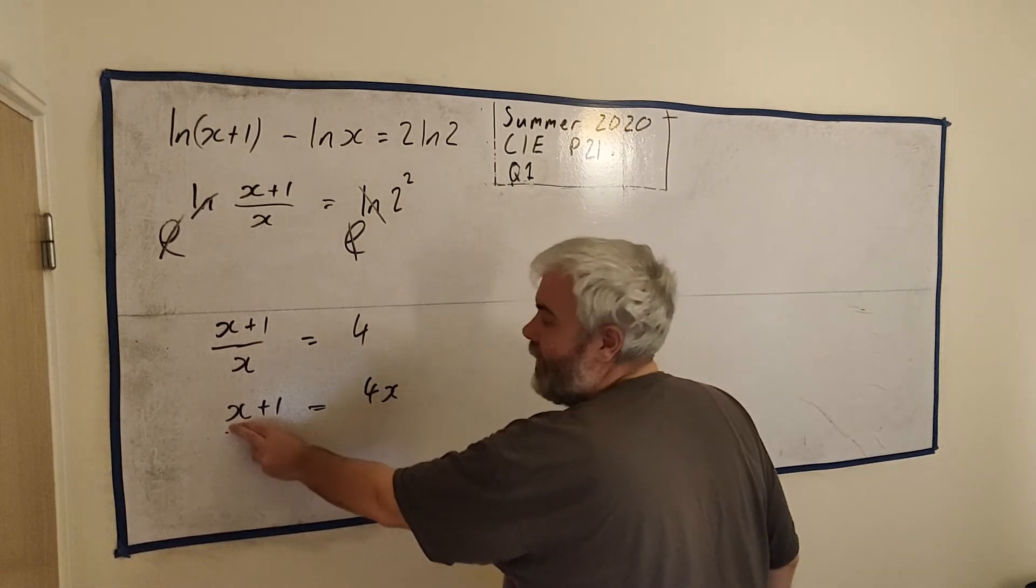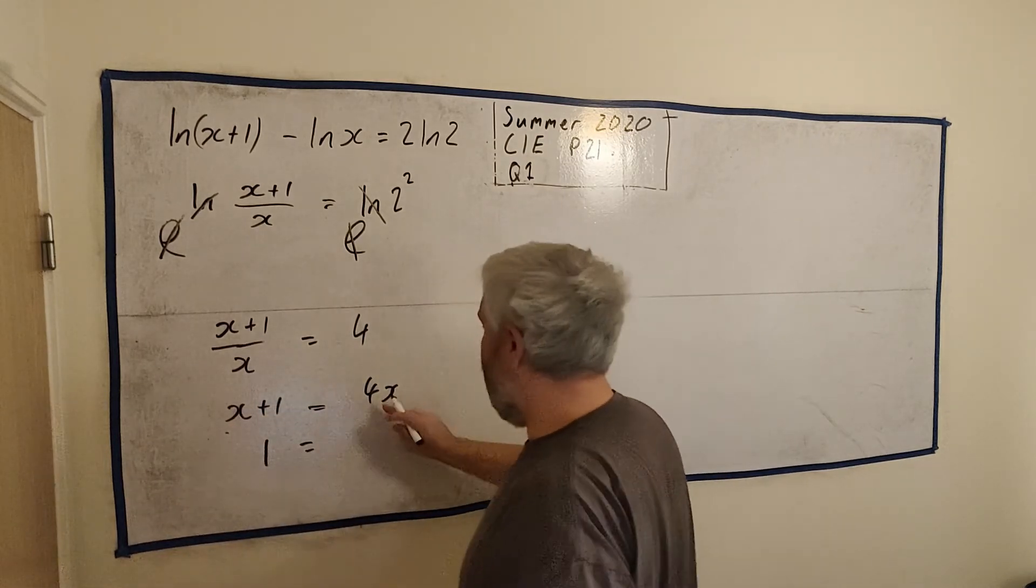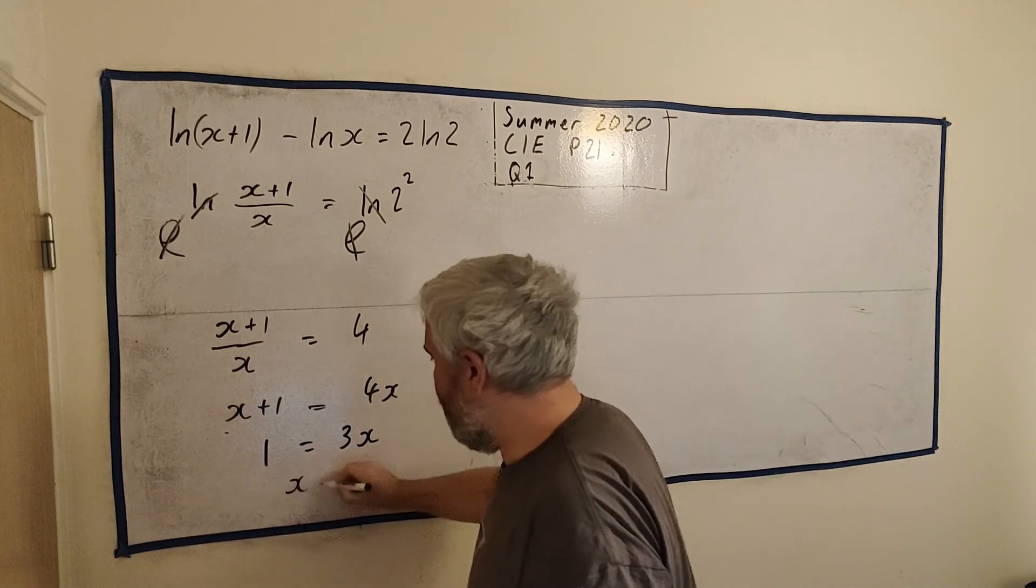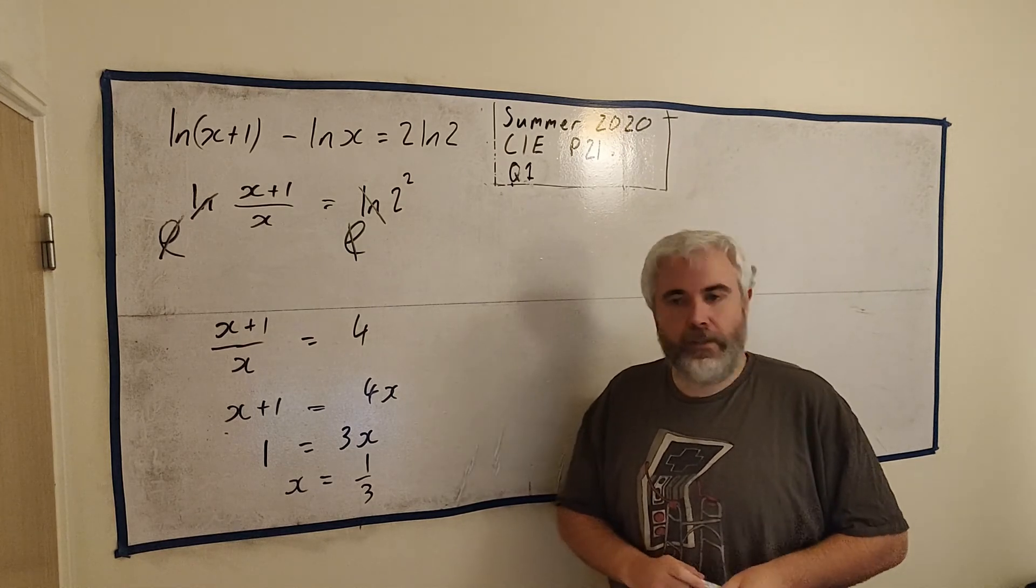Let's take x away from both sides. So we're left with 1 over here, and 4x minus x is 3x. So we're left with x equals 1/3. And that's it. That's all the question required of us.